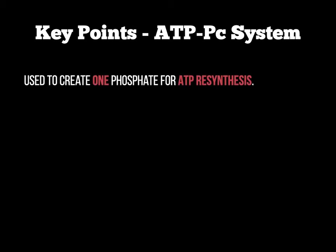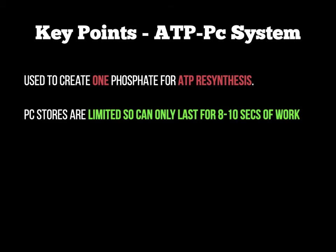The key points of the ATP-PC system are as follows. This system only creates one phosphate for ATP resynthesis, and therefore it can only support the creation of one ATP compound. A major drawback of the ATP-PC system is that the phosphocreatine fuel stores are very limited in the body, and therefore it can only last for around 8 to 10 seconds of work. This is why sprinting may only require this energy system for around 8 to 10 seconds, after which the body will need another energy system to continue.